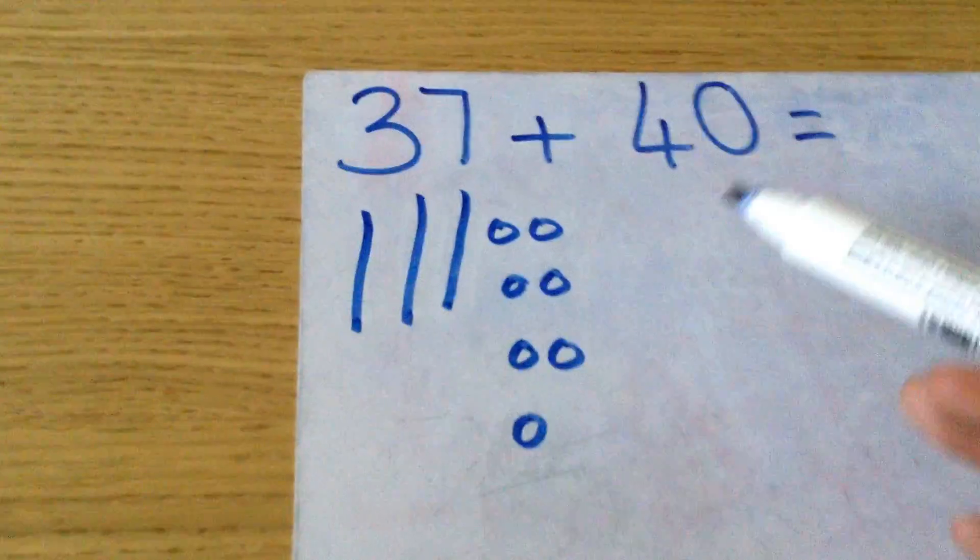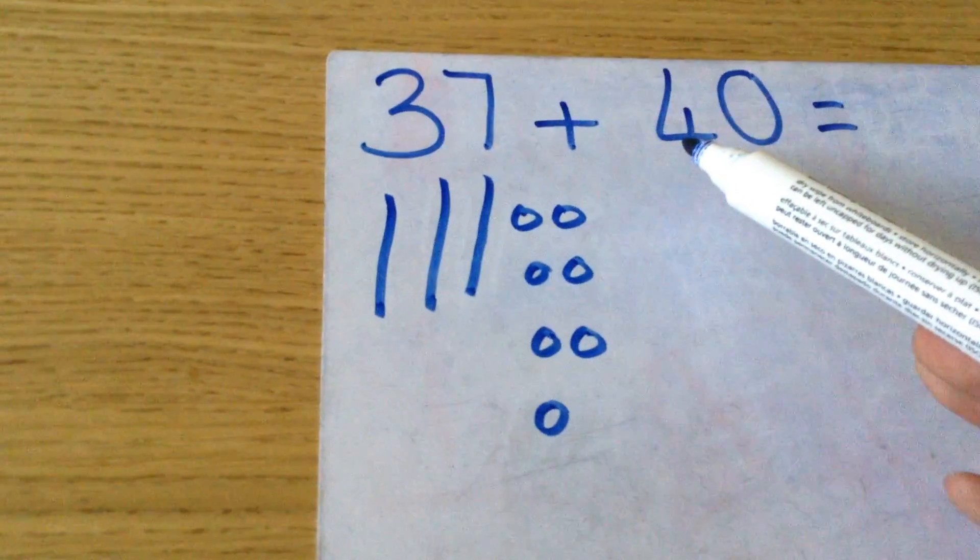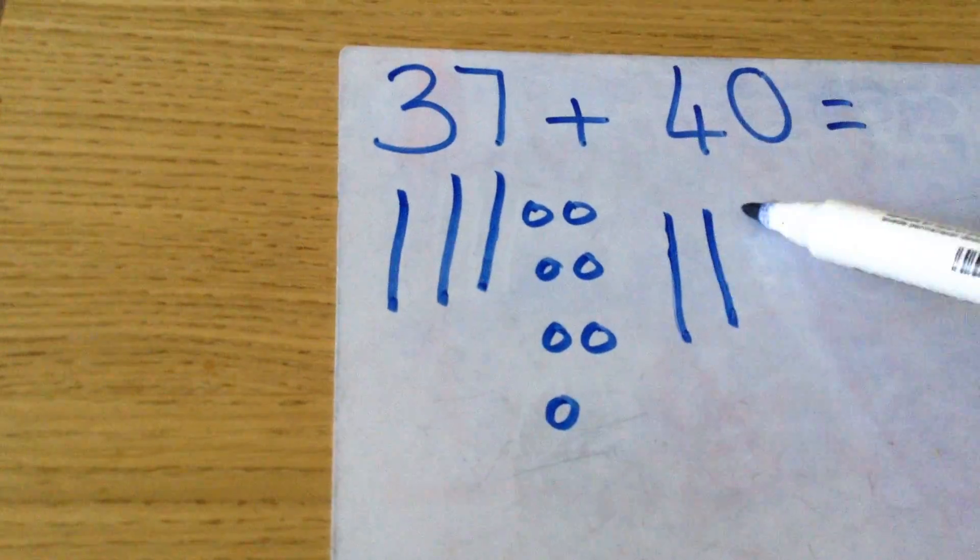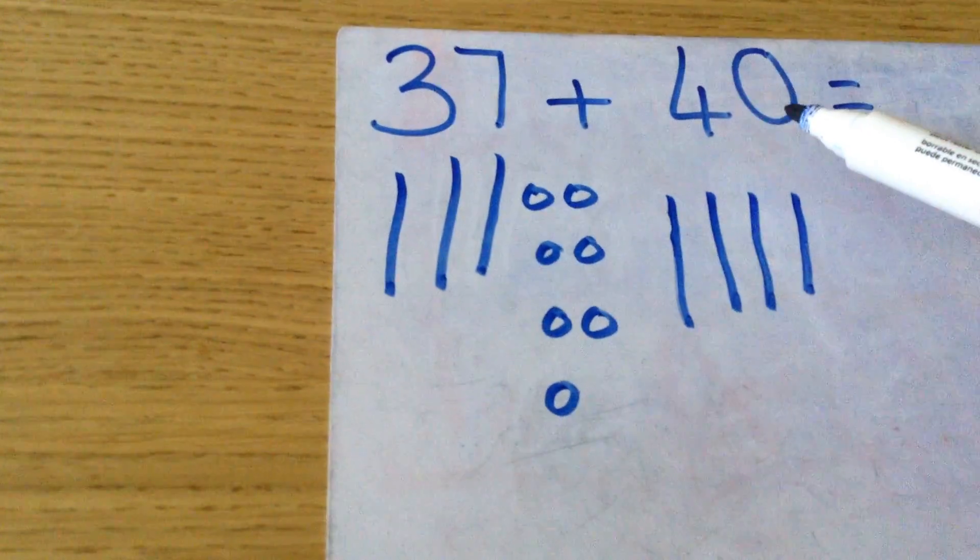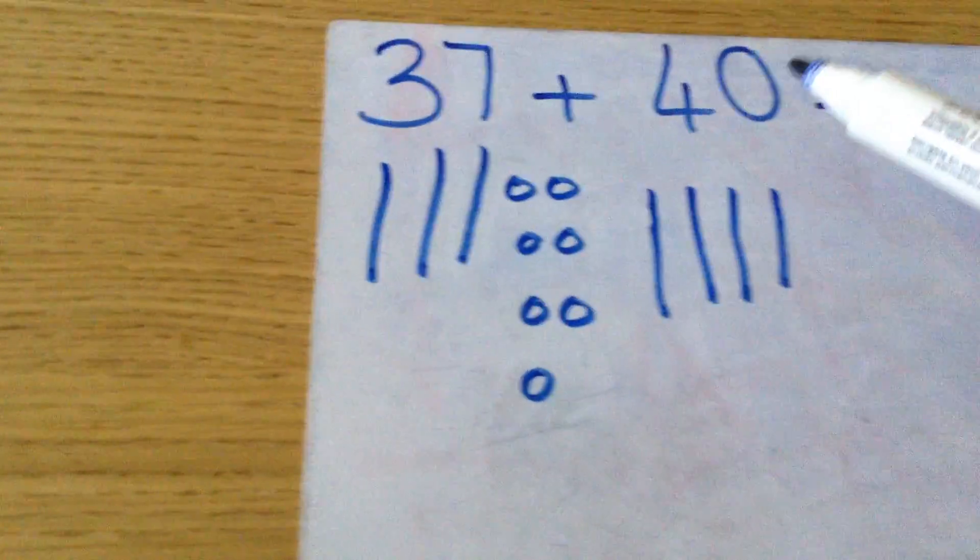Okay, now I'm going to look at 40. It's got four in the tens column and zero in the ones column, so I don't need to draw any ones.